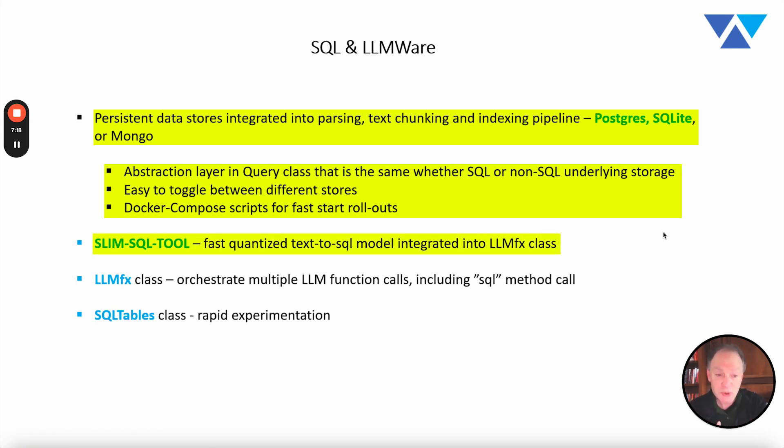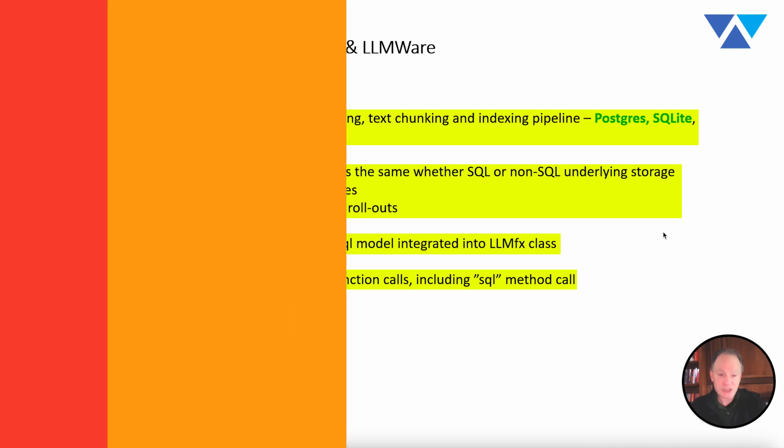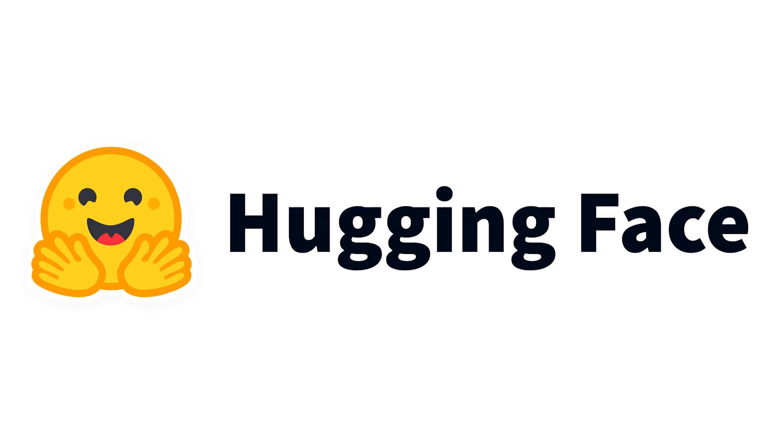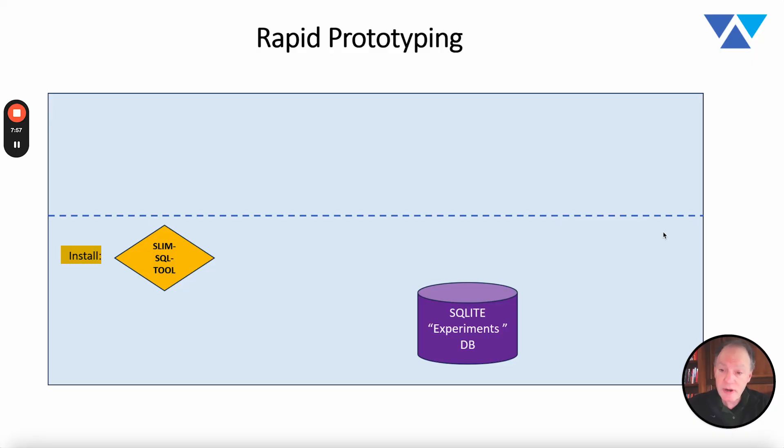As I mentioned earlier in our Slim rollout, we did roll out a SQL tool. There are some other really good models that we're experimenting with right now that we're going to be bringing into this as well. We want you to look at a wide range of text-to-SQL conversion models that you can bring into this pipeline. And then we've rolled out these two new classes - our LLMFX class and our SQL tables class - really with the intent of optimizing rapid experimentation. So how does all of this work? I'm going to show you a couple of examples, but where it really starts is you install the Slim SQL tool. It's in open source, it's in a Hugging Face repository with LLMware. You download and install that tool.